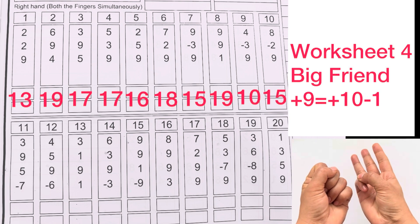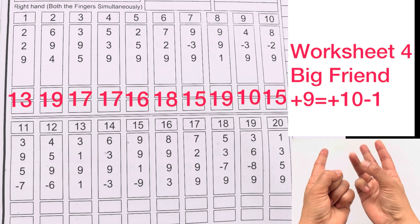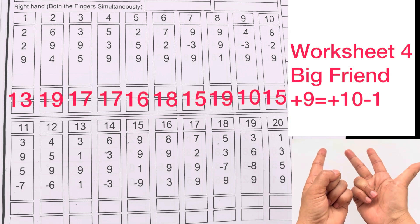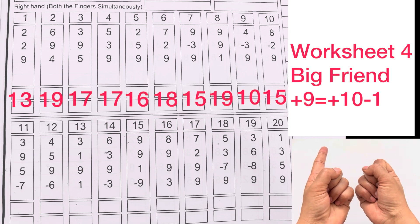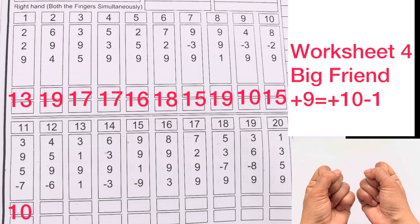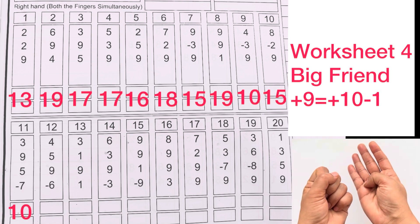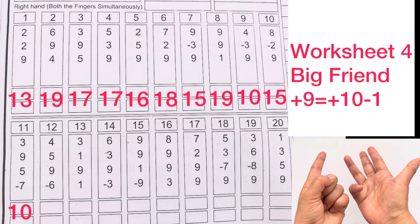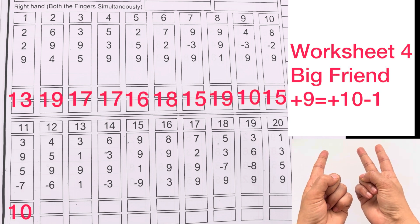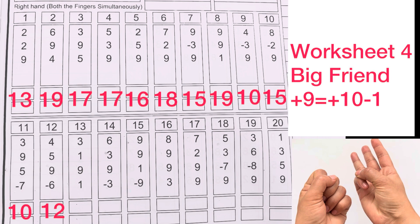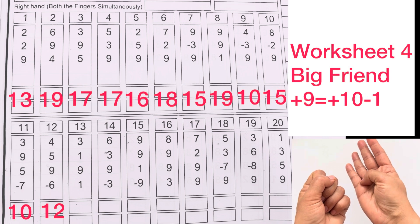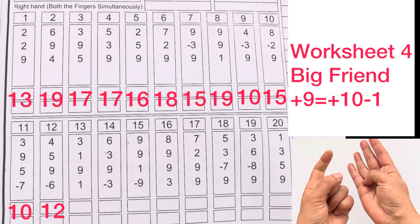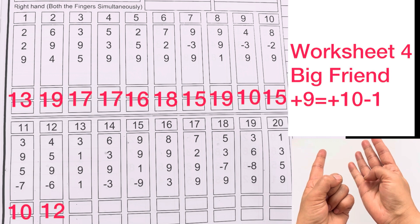3 plus 9, plus 10 minus 1, plus 5 minus 7. Answer is 10. 4 plus 5 plus 9 minus 1 minus 6. Answer is 12. 5 plus 9 plus 9, plus 10 minus 1. Answer is 15.